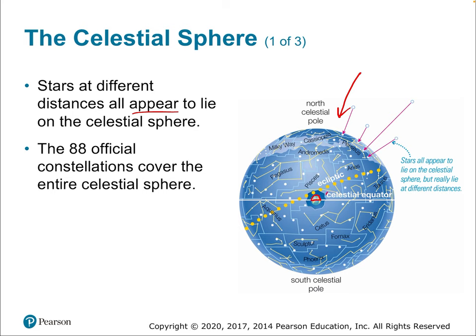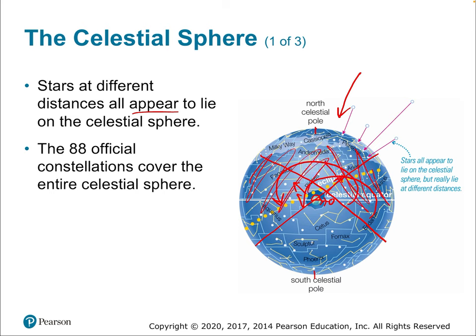If you're in the northern hemisphere of Earth, you'll be able to see stars in the northern hemisphere of the celestial sphere. If you're exactly on the North Pole, you'd see exactly one half of the celestial sphere. If you're at the equator, you can actually see the entire celestial sphere over a year — you'd see the North Celestial Pole at one horizon and the South Celestial Pole at the other, and over a full calendar year, you'd see all the stars.